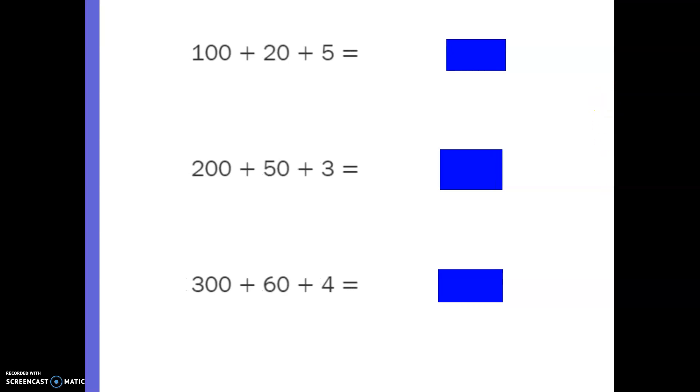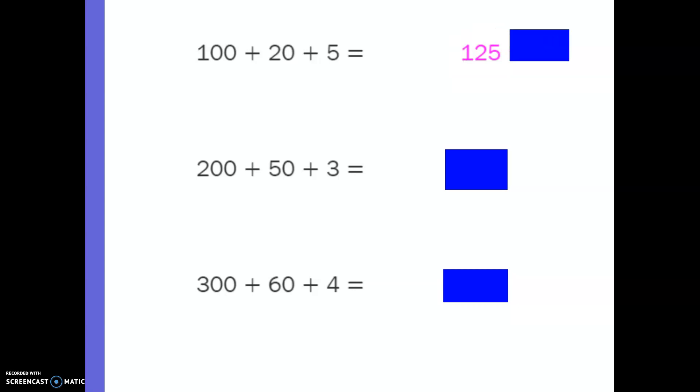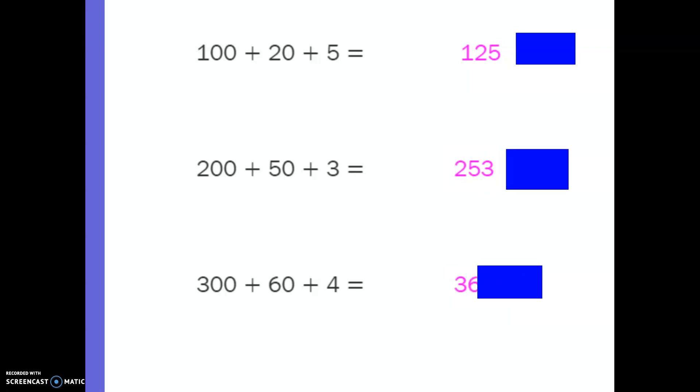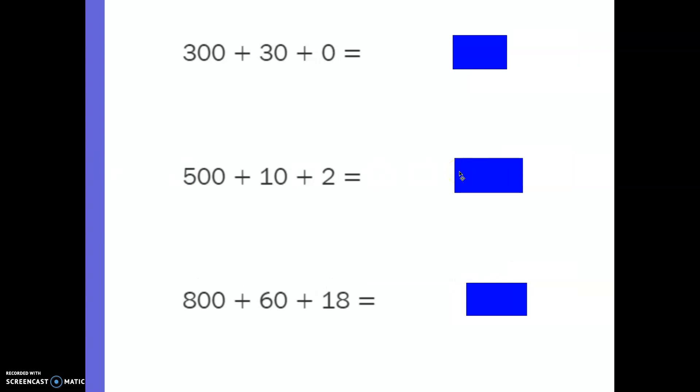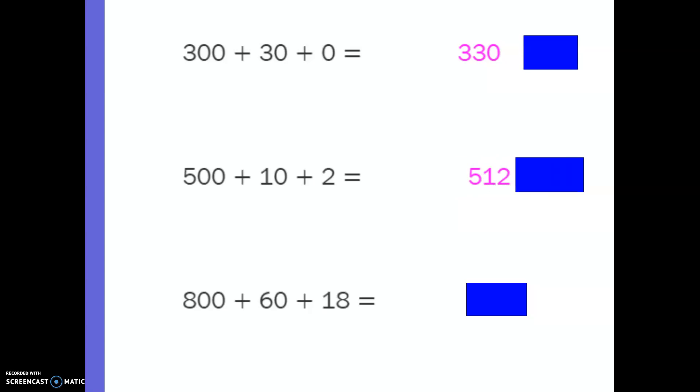Okay, are you ready? So 100 plus 20 plus 5 is 125. 200 plus 50 plus 3 is 253. 300 plus 60 plus 4 is 364. Erase. We're going to try it again with these three problems.